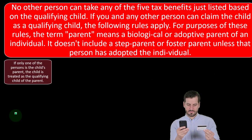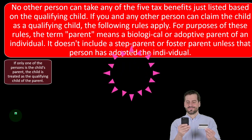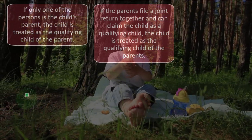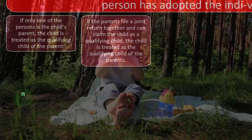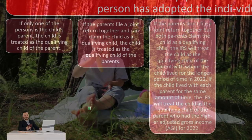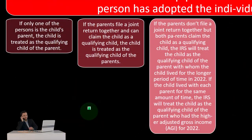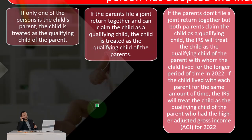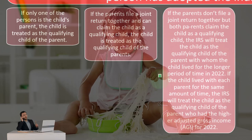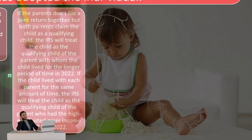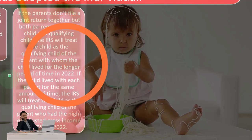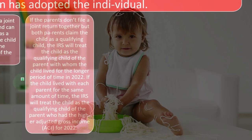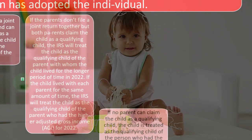If only one of the persons is the child's parent, the child is treated as a qualifying child of that parent. If the parents file a joint return together and can claim the child as a qualifying child, the child is treated as a qualifying child of the parents. If the parents don't file a joint return together but both claim the child, the IRS will treat the child as the qualifying child of the parent with whom the child lived for the longer period of time in 2022. If the child lived with each parent for the same amount of time, the IRS will treat the child as the qualifying child of the parent with the higher AGI for 2022.